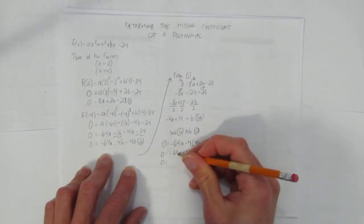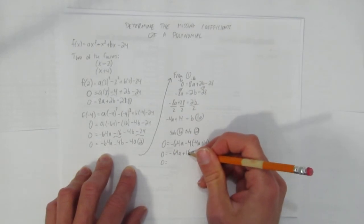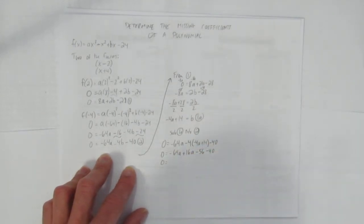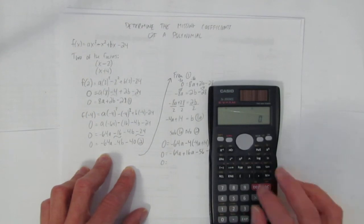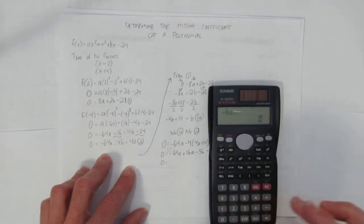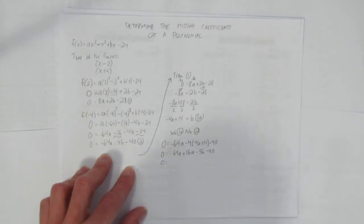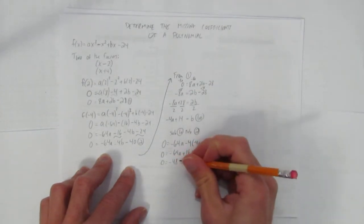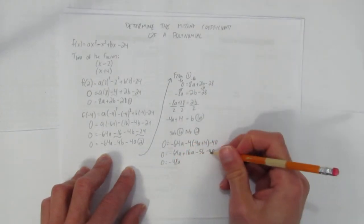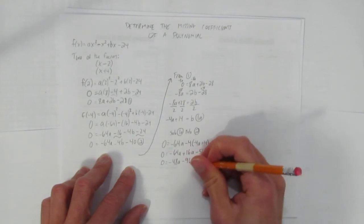It's going to simplify really quickly. 0 equals negative 64 plus 16. So you can check that on your calculator if you want. I'm pretty sure it's negative 48, but no judgments if you do it. Negative 64 plus 16. Yep. Negative 48a. And then minus 56 minus 40 is minus 96.